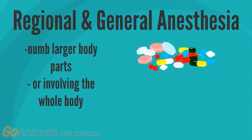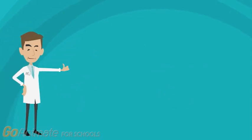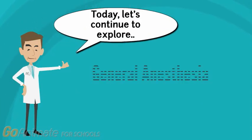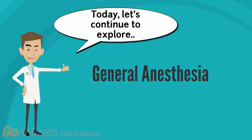Regional and general anesthesia widens to larger parts or the whole body to block pain sensation. Typically, this is done by a combination of drugs in the blood and inhaled gas. Today, we will be focusing on general anesthesia.